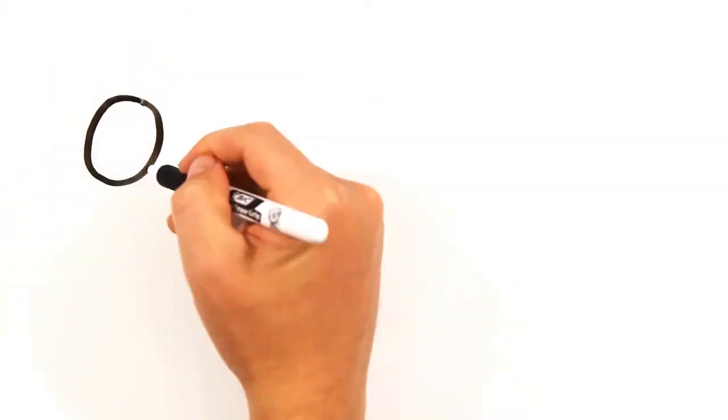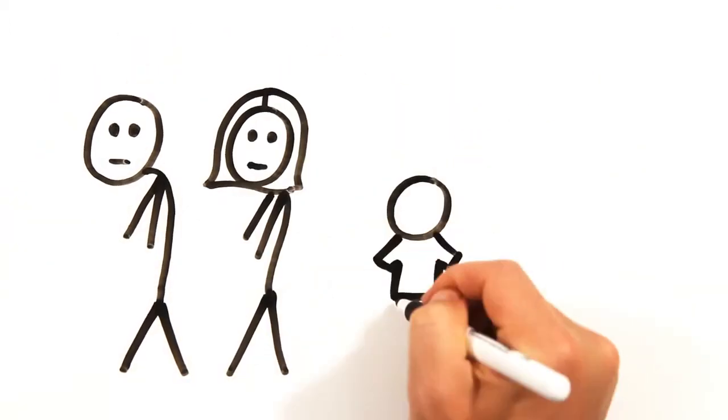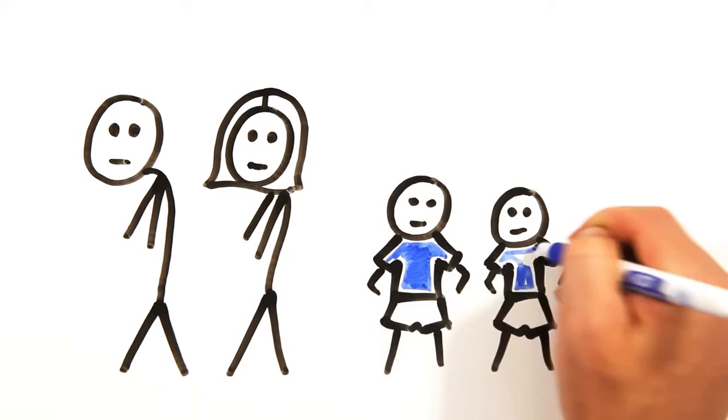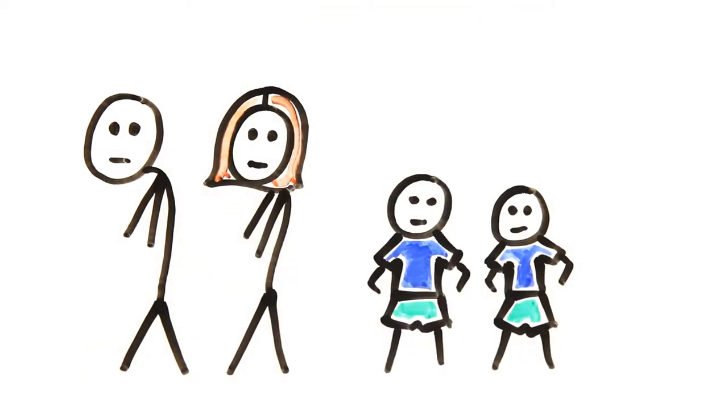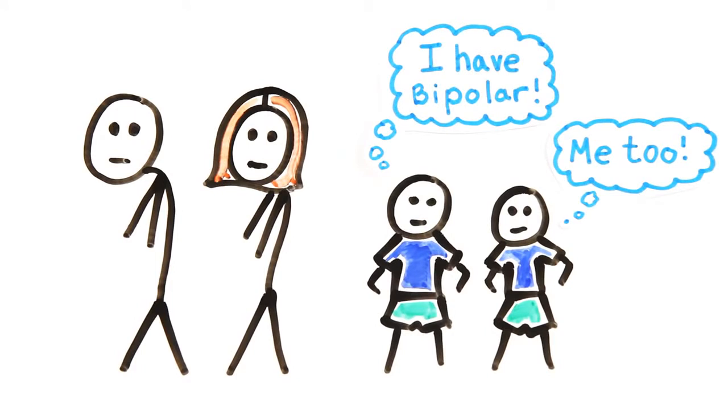Many other genes have been identified which increase the likelihood of depression too, and it makes sense when you consider that depression and bipolar disorder both run in families. Studies of identical twins show that if one has bipolar disorder, the other has a 60-80% chance of developing it too.